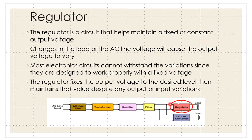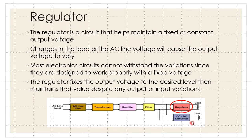Here is where we get the constant voltage. Changes in the load or AC line voltage can cause the output voltage to vary — we don't want that. So we use either a regulator or a DC-DC converter.